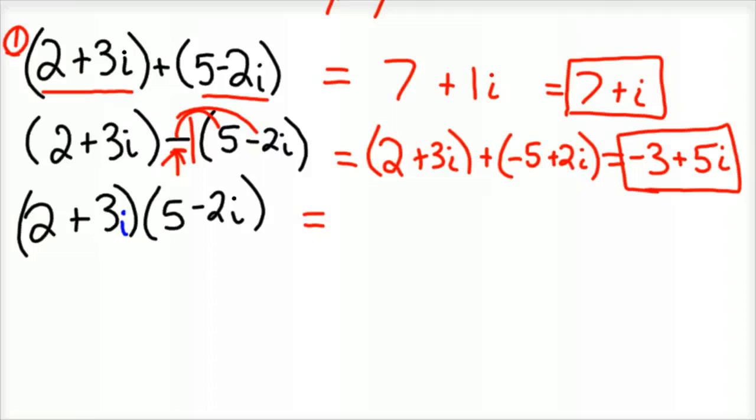Sorry about that. But anyway, you just distribute. So 2 times, or FOIL is often called. But I call it distribution. So you take the 2 and distribute it through both of them. And so you'd have 10 minus 4i. And then you would have, now distribute the 3i through. So you'd have plus 15i and then 3i times negative 2i is minus 6i squared.